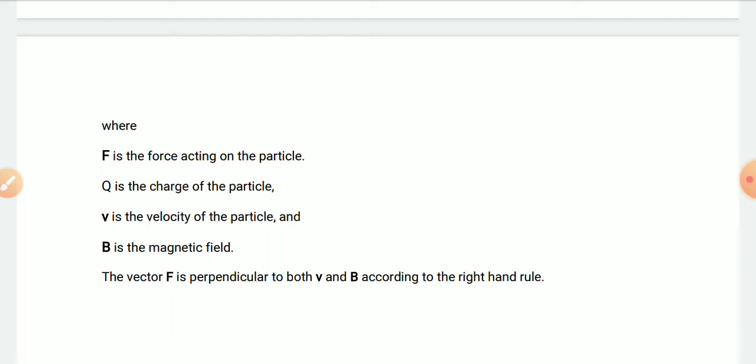The vector F is perpendicular to both v, the velocity of the particle, and B, the magnetic field, according to the right-hand rule. So this is the introduction for the total work of the magnetohydrodynamic generator.